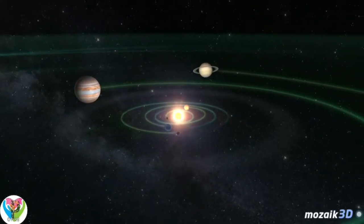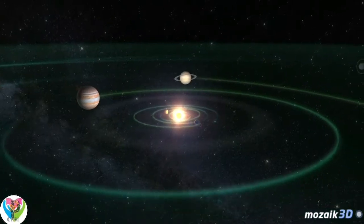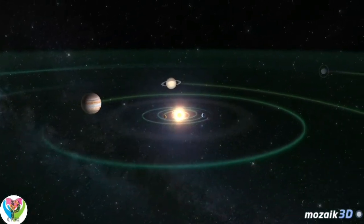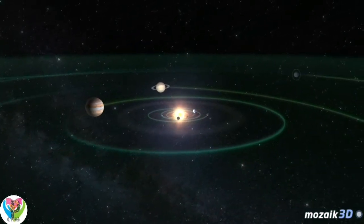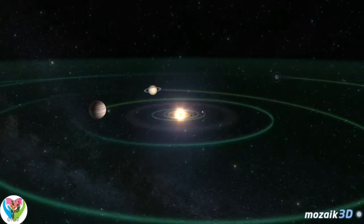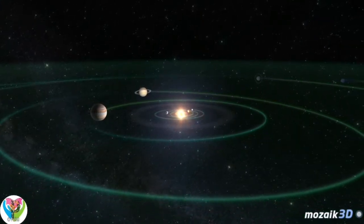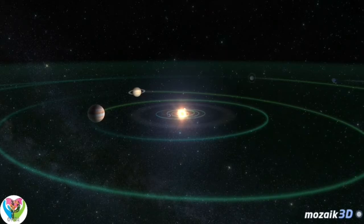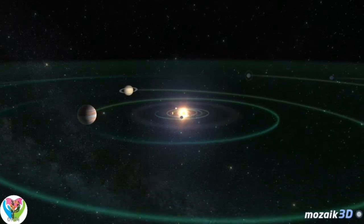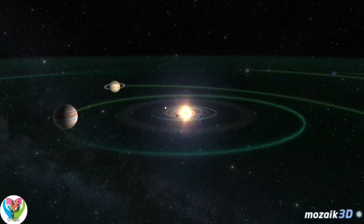Eight planets orbit the Sun. Six of these have moons, the exceptions being Mercury and Venus. In the order of their distance from the Sun, the planets are Mercury, Venus, Earth, Mars, Jupiter, Saturn, Uranus and Neptune.